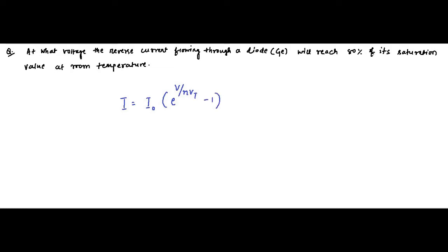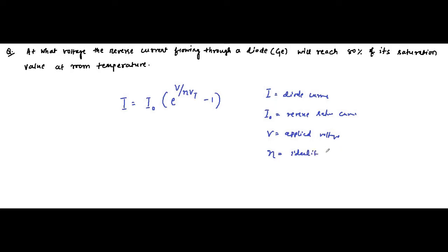This is the diode equation. Here, I is the diode current, I0 is the reverse saturation current, V is the applied voltage across the diode, eta is the ideality factor, and V subscript T is the thermal voltage. These are the specific things involved in the diode equation.